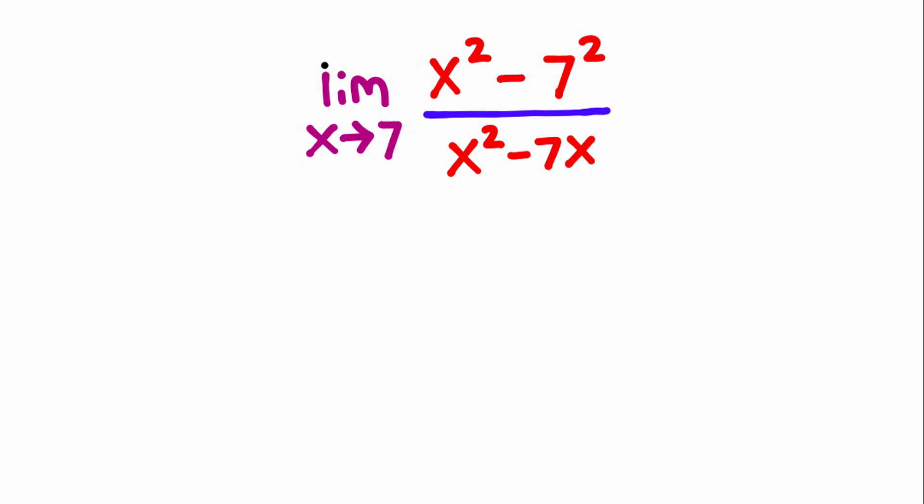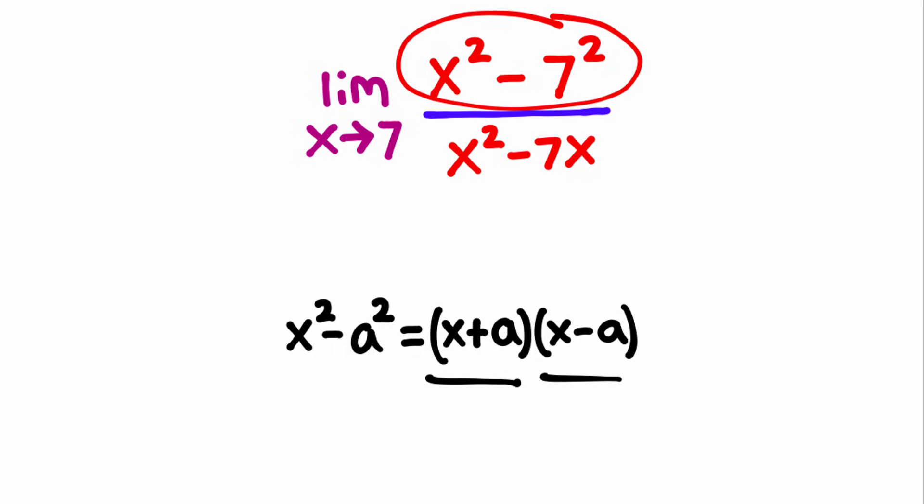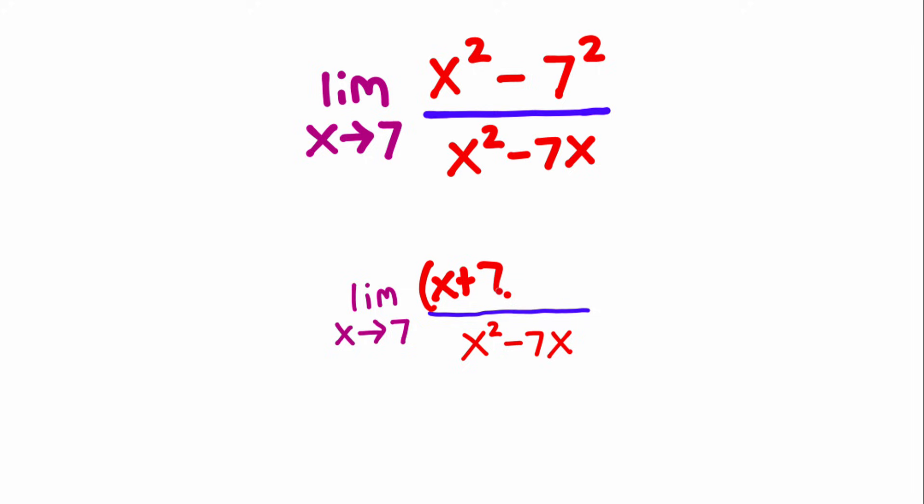Now this is the difference between two squares, and there's an algebra rule that says x squared minus a squared is equal to x plus a times x minus a. And since we have x squared minus 7 squared, I can take this and put it in the form x plus 7 times x minus 7. Now in the denominator, I notice that we have an x in common with each term. So I can reverse distribute this x, giving me x times x minus 7.